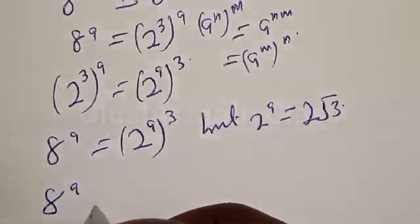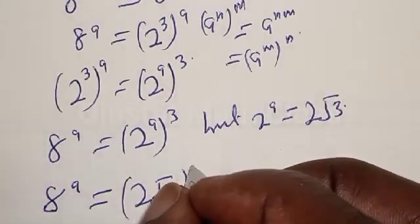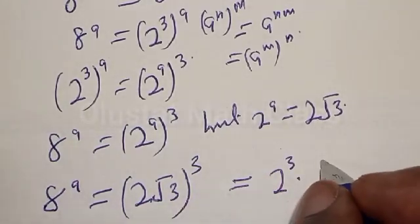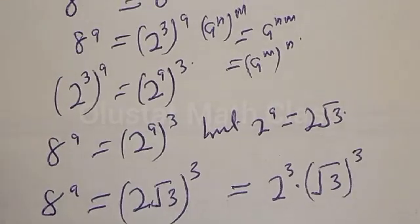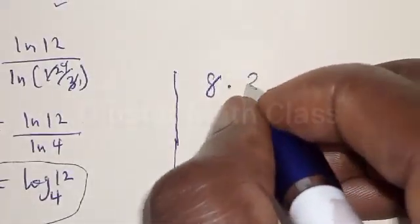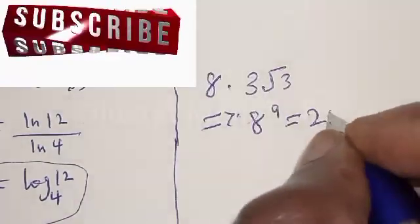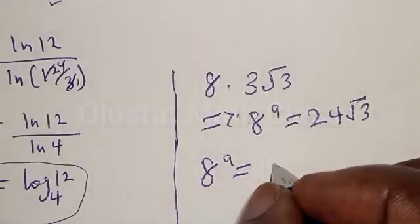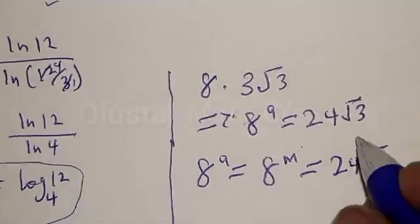We have 8 raised to power a equal to (2 root 3) raised to power 3, which equals 2 raised to power 3 multiplied by (root 3) raised to power 3. That gives us 8 multiplied by 3 root 3, which equals 24 root 3. Therefore, our final answer is: 8 raised to power m is equal to 24 root 3. That is our final answer.